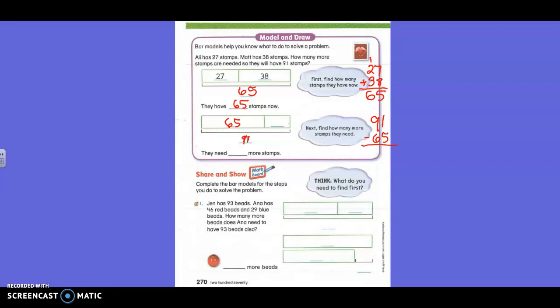We have the big number, 91, and we have one of the small numbers. So you're subtracting 65 from 91. So 91 minus 65. Can we do one minus five? No. So we need to come borrow from the nine, which would make it a what? An eight. And then we're giving the 10 to the one, which would make it an 11. Okay. Now what's 11 minus five? Six. What's eight minus six? Two. So how many more do they need? 26. 26 more. All right. Oh, guess what? These are two-step problems that they're having you do.